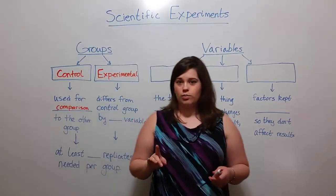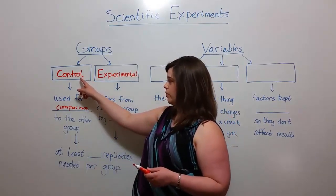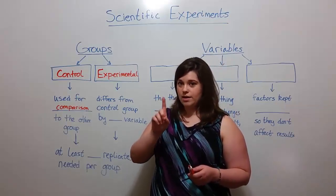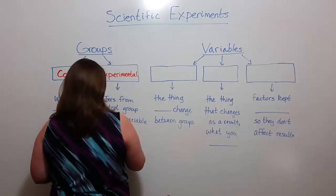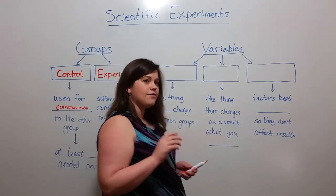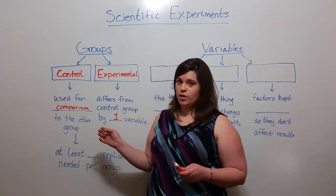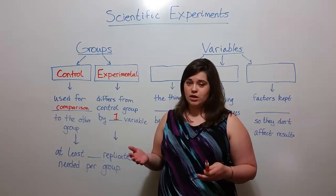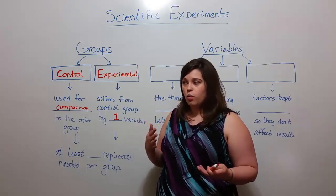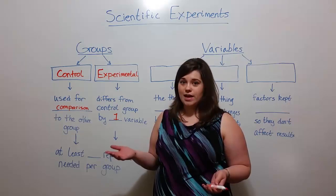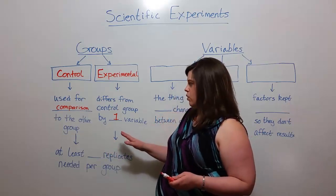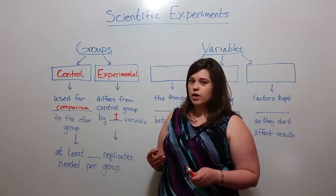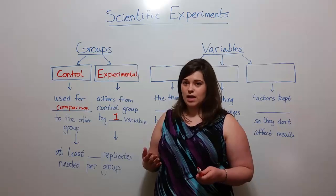And this is a critical point: the control group and the experimental group differ by only one variable. If these two groups differ by more than one variable, then the differences between the groups — the outcome of the experiment — you won't know which of the variables is contributing to that difference. That's why it's important that these two groups only differ by one variable. Also critical is something that we know as sample size.